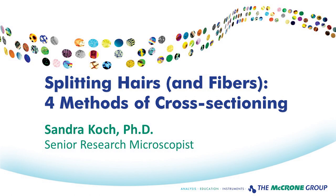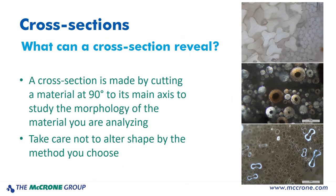And now I will hand the program over to Sandy. Today, I am going to share a few methods that I find useful to section hairs and fibers to better observe their cross-sectional shape and internal structures. A cross-section is made by cutting across a material at right angle to its main axis. We can use physical cross-sections to more clearly observe the shape of a fibrous material.